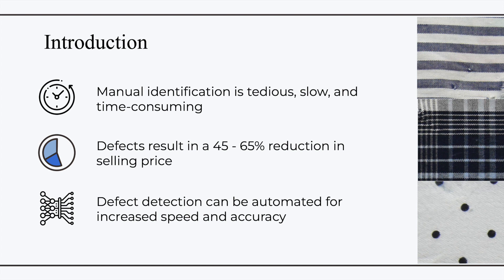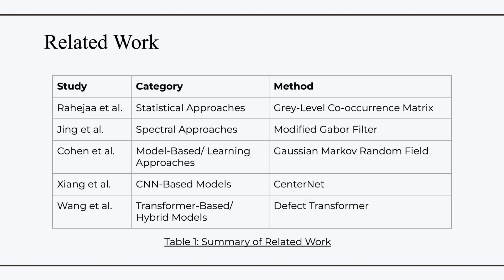Hence, defect detection can be automated to increase speed and accuracy of this process. Past research in this domain includes statistical approaches, spectral analysis, and model-based or learning approaches. In addition, deep learning techniques like CNN-based and transformer-based models have exhibited strong performance in object detection tasks. Wang et al. built such a model specifically for defect detection, known as the Defect Transformer.